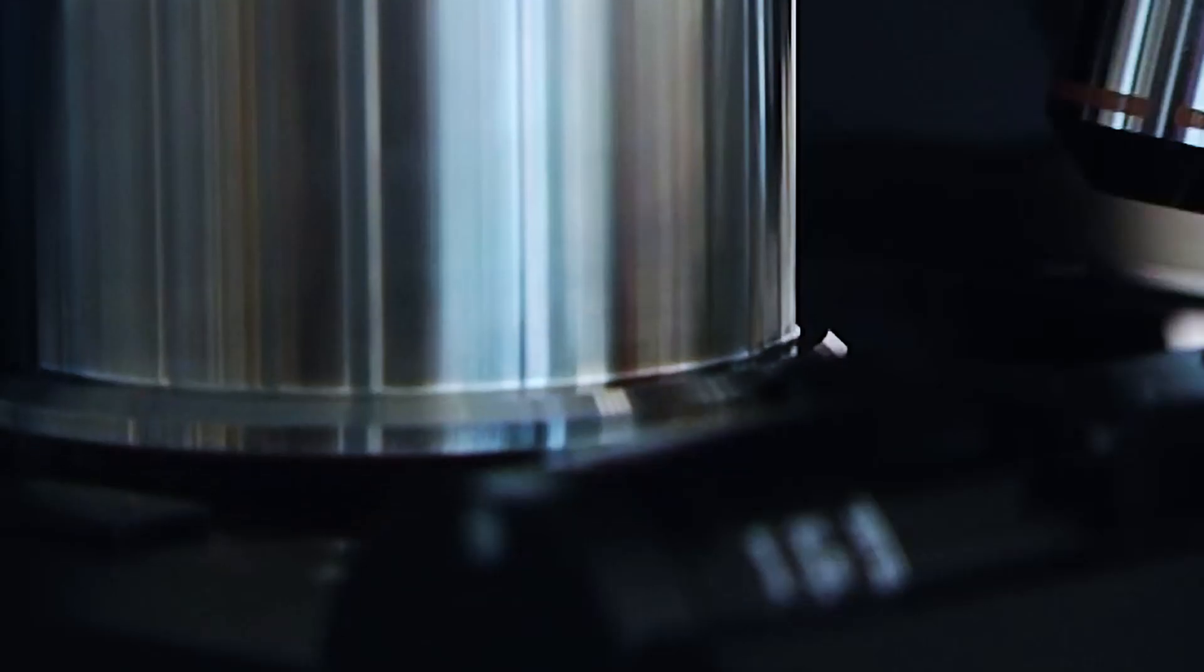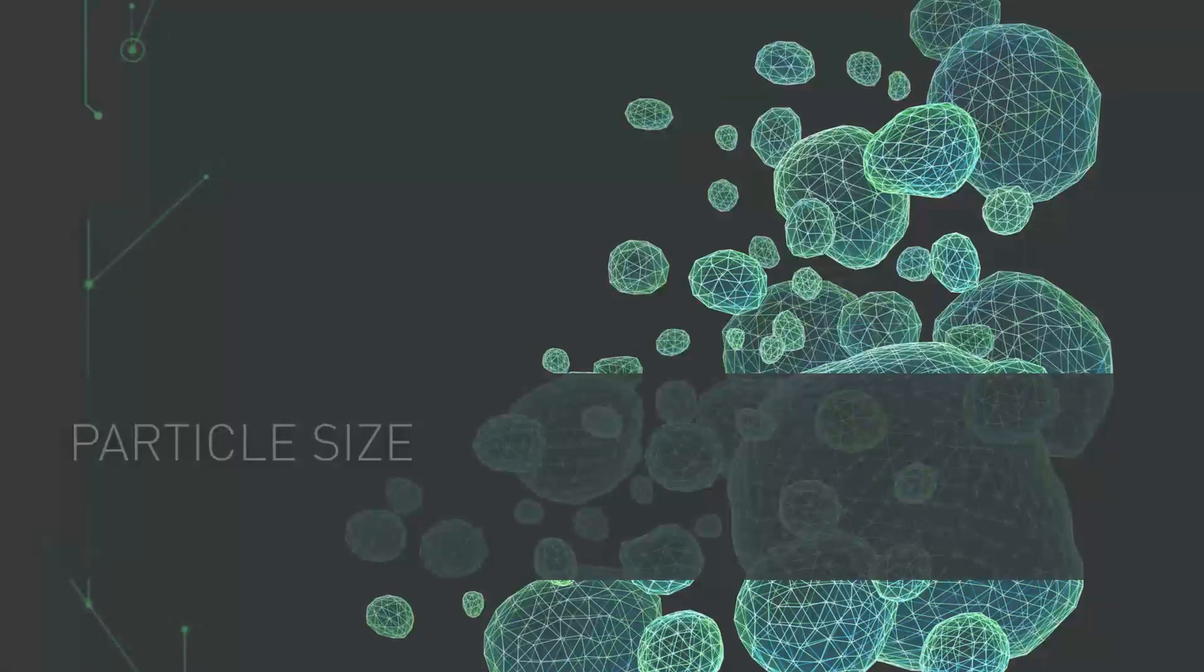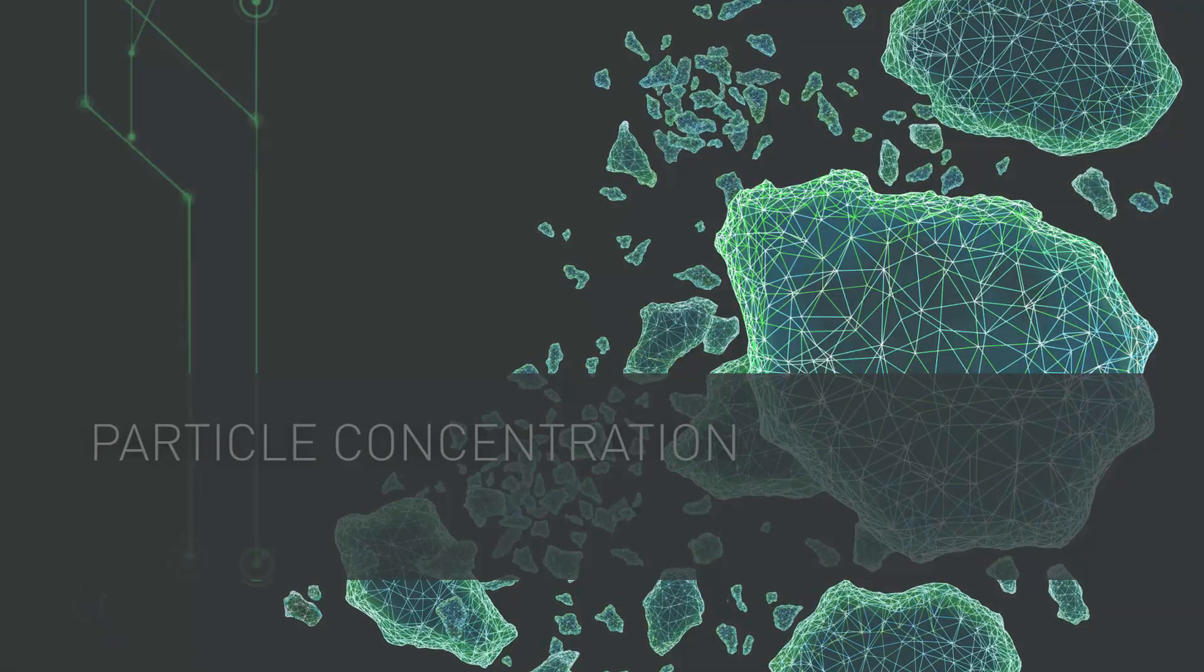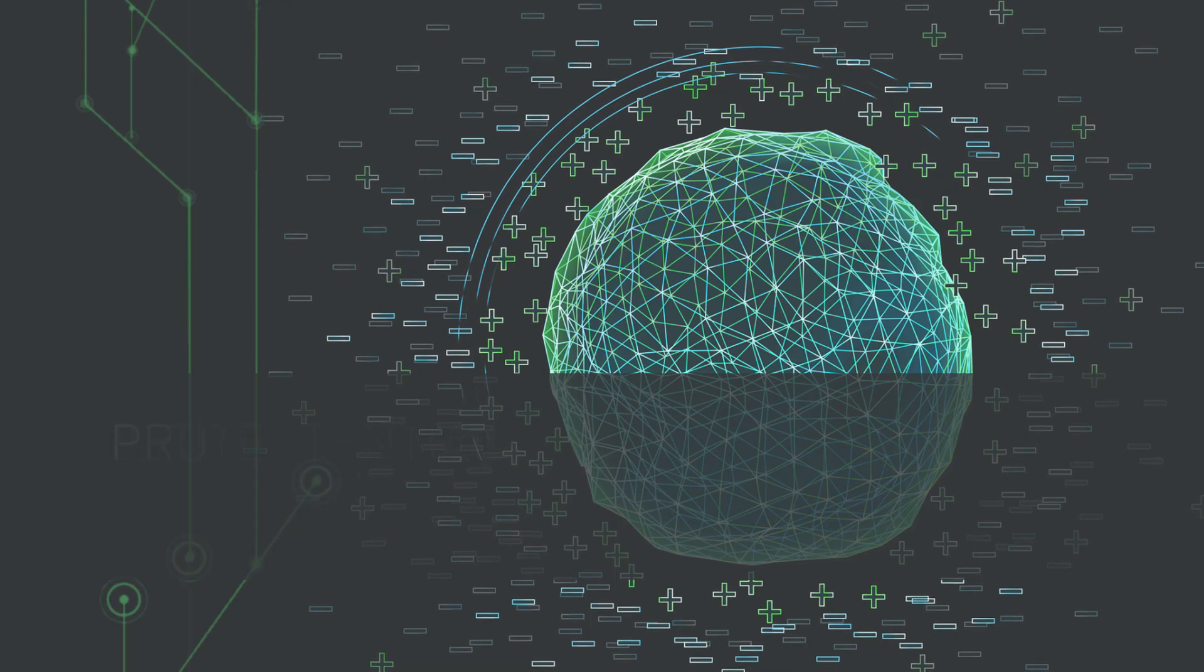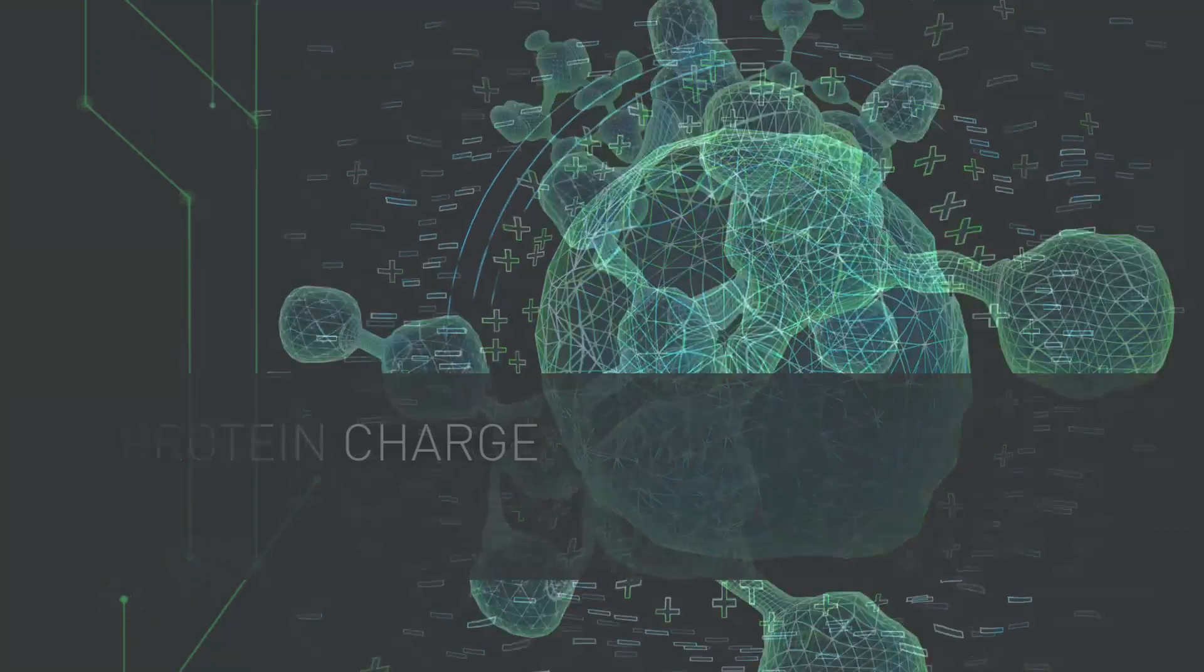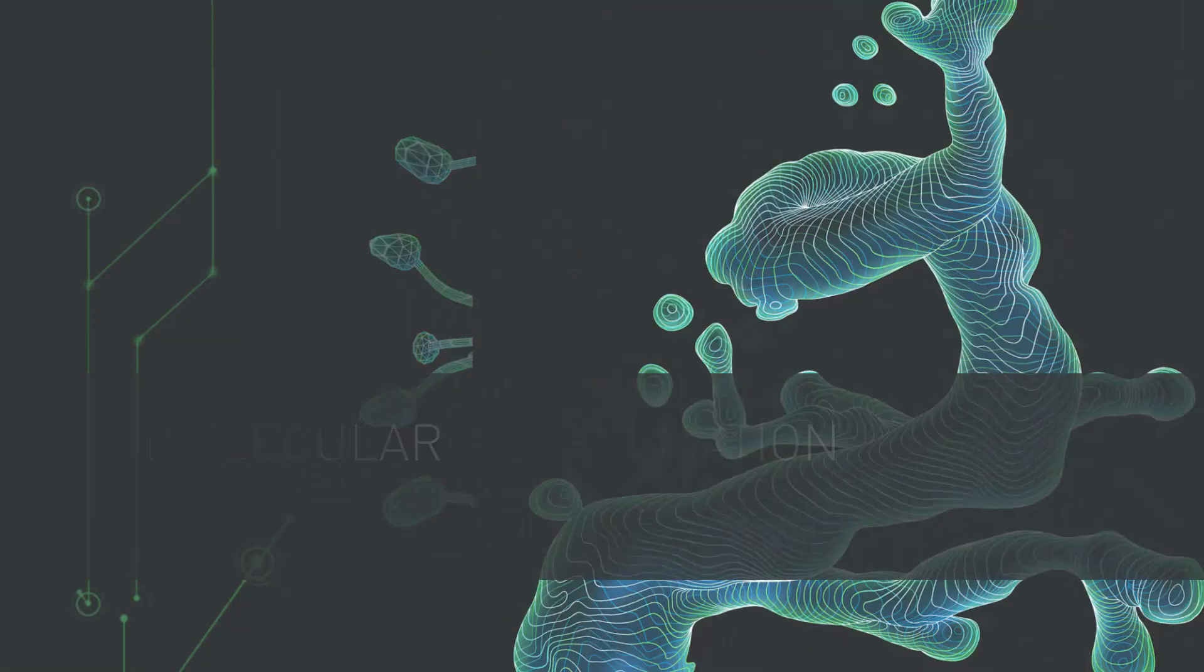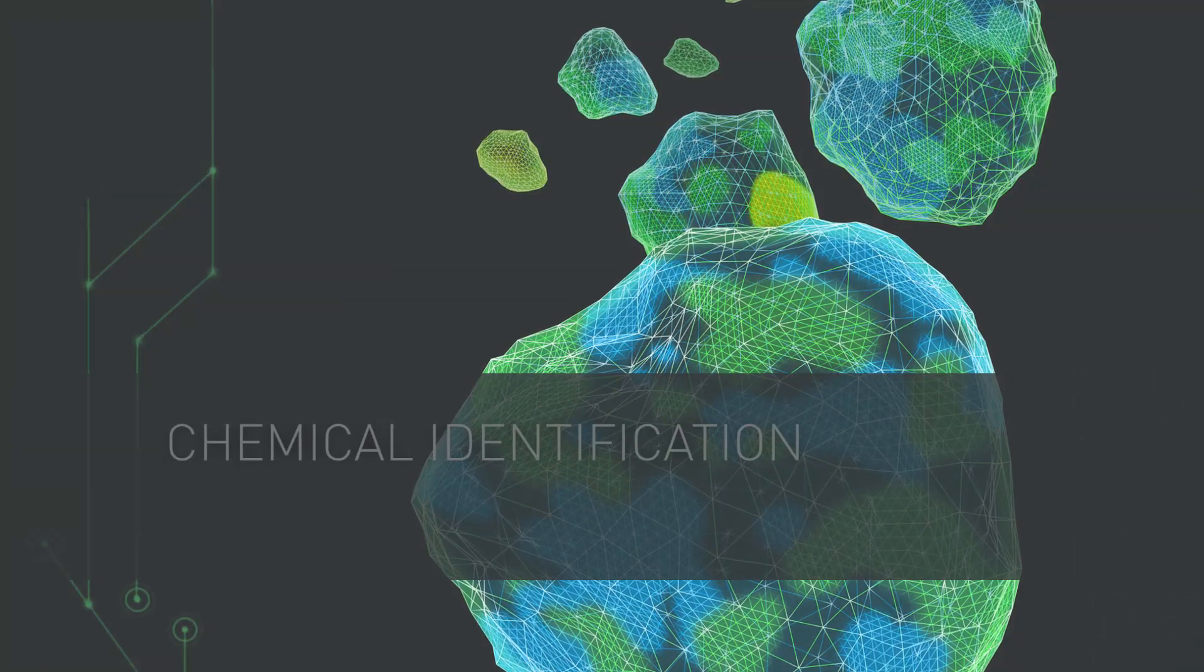Parameters measured by Malvern systems include particle size, particle shape, particle concentration, zeta potential, protein charge, molecular weight, mass, size and conformation, rheological properties and chemical identification.